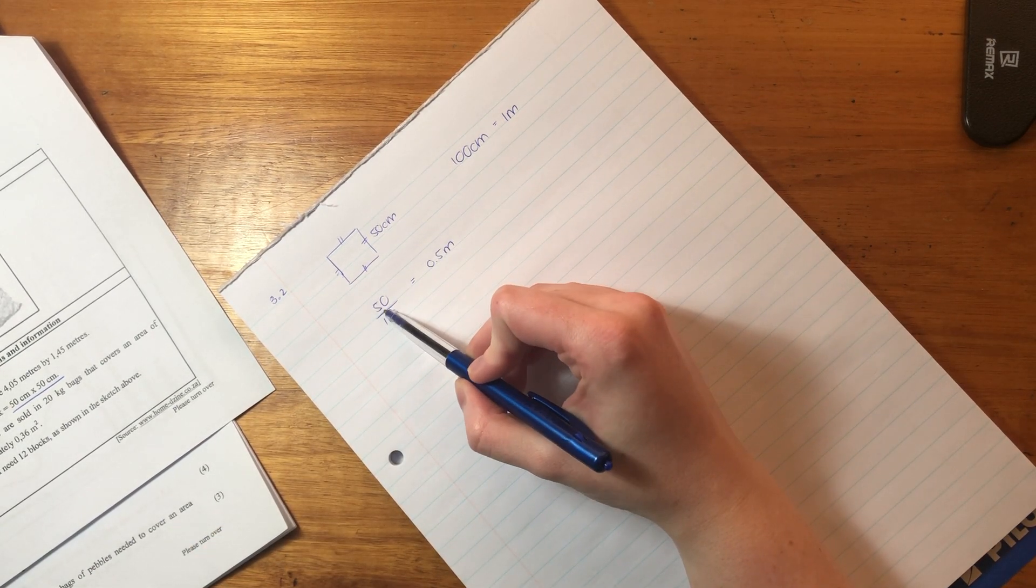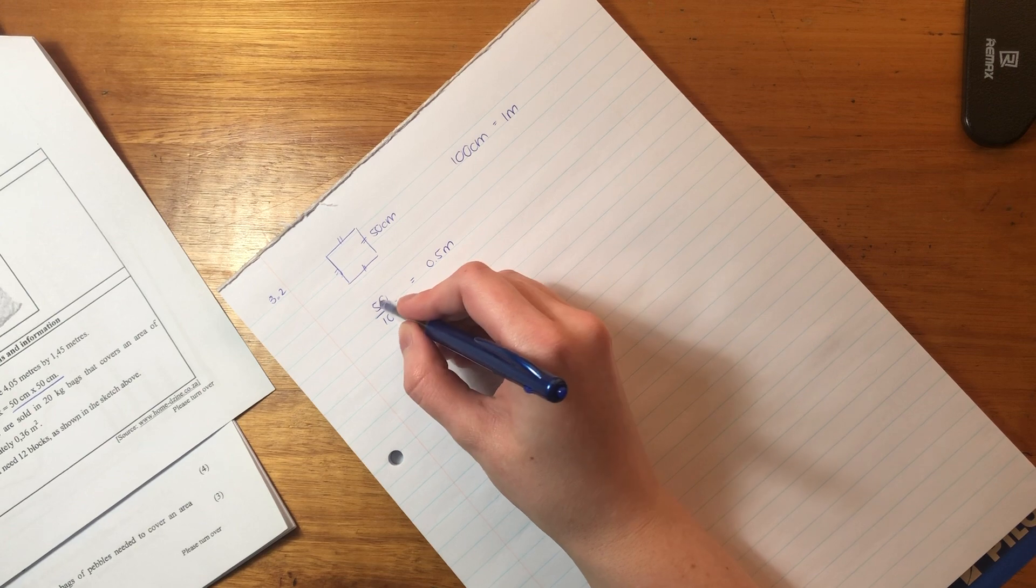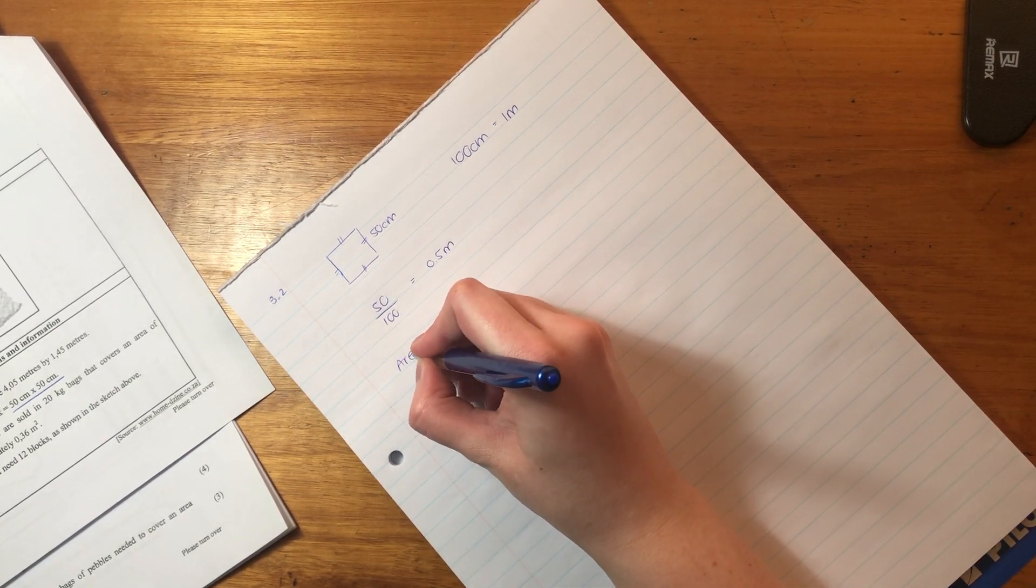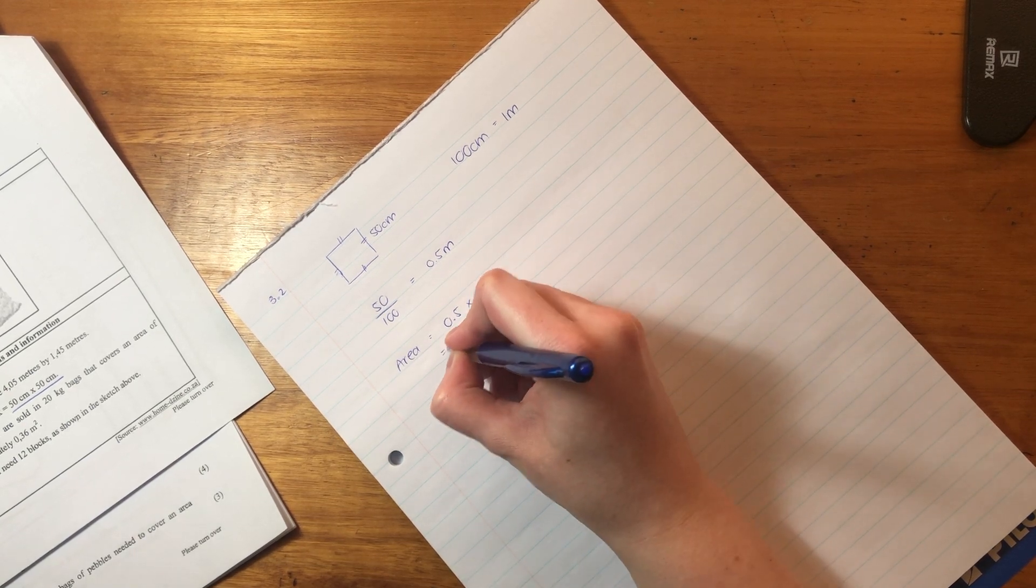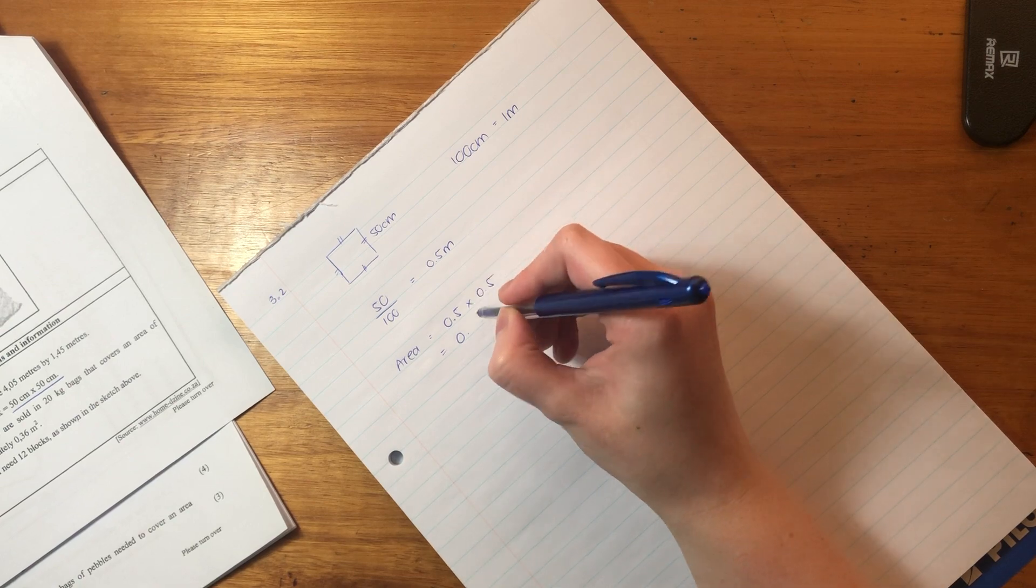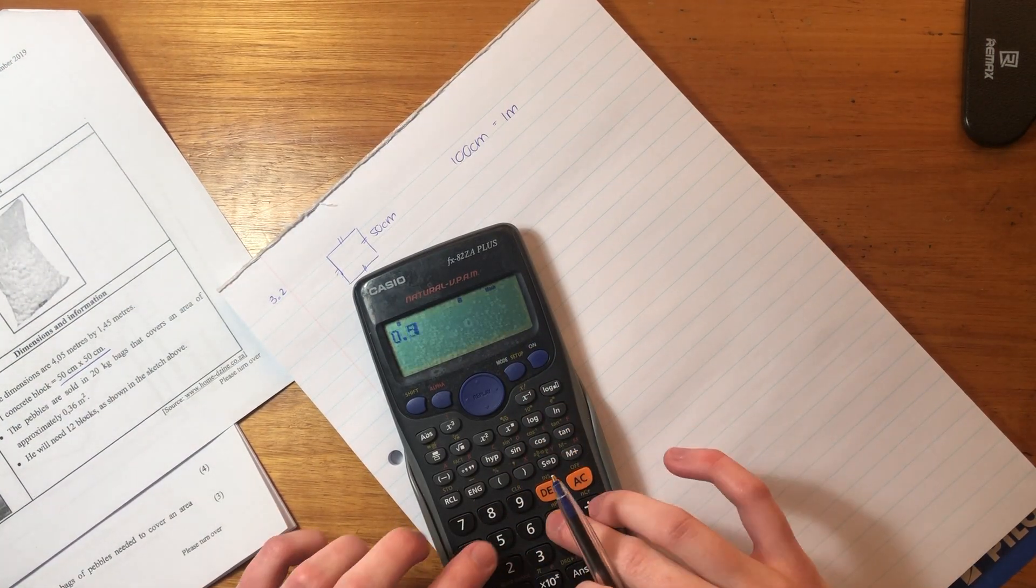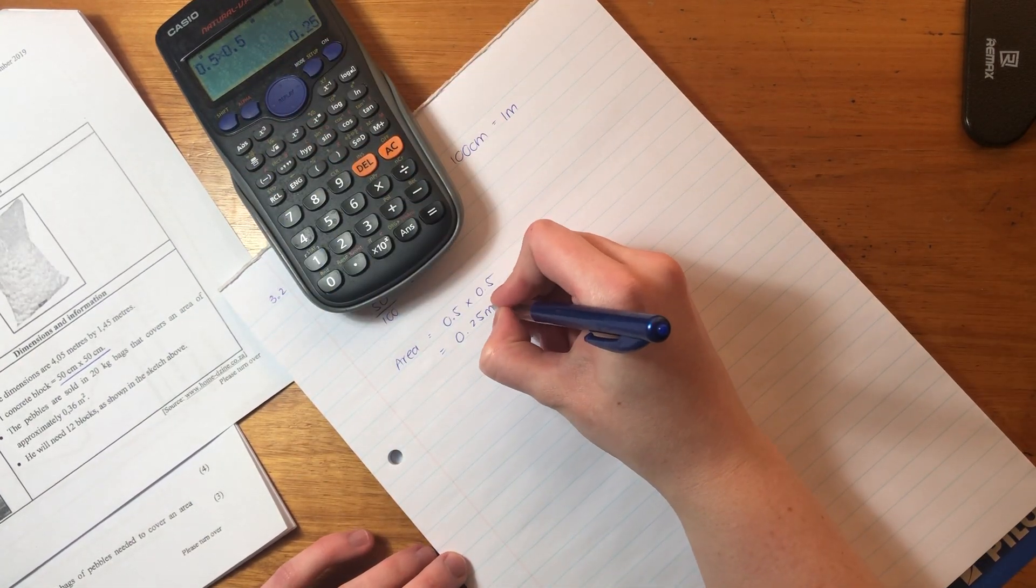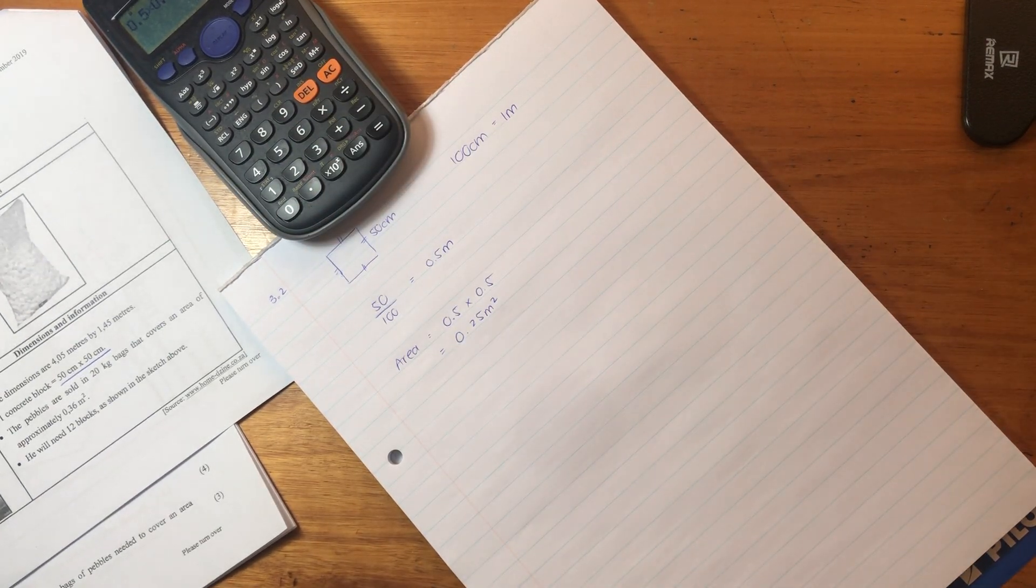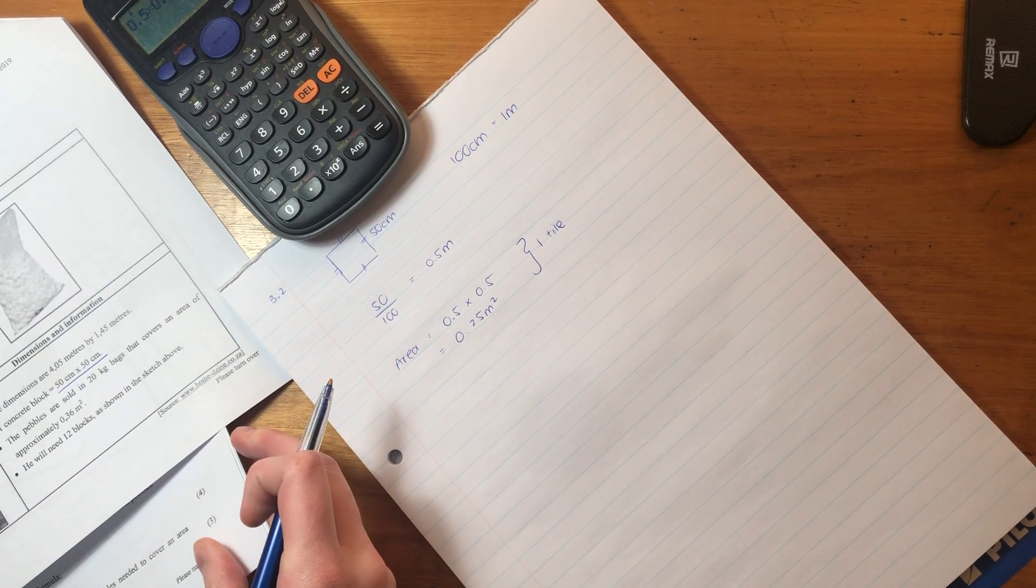We know that the concrete block is a square, so each of the sides are equal. We know that 100 centimeters equals one meter. So 50 centimeters, we divided by 100 to get 0.5 meters. When we move from centimeters to meters, because we're going from a smaller measurement to a larger measurement, you will have fewer meters than you will centimeters. So area would be equal to 0.5 times 0.5, and that equals 0.25. It's 0.25 meters squared, but we are not done yet. This is only for one tile.